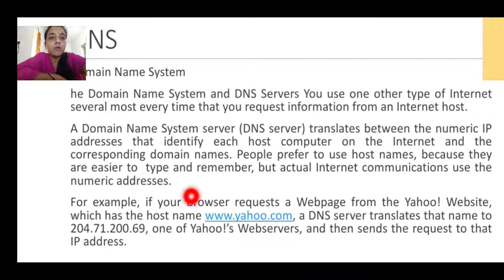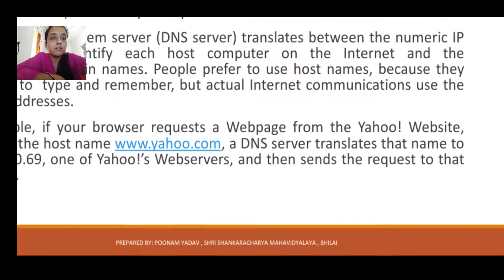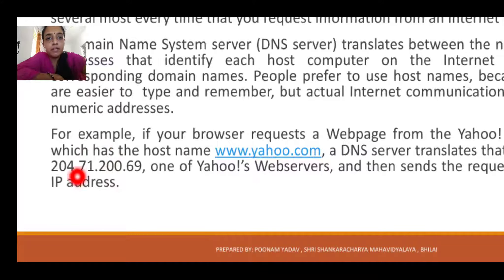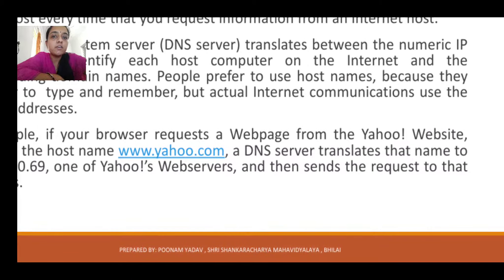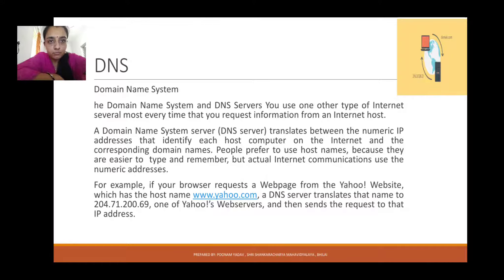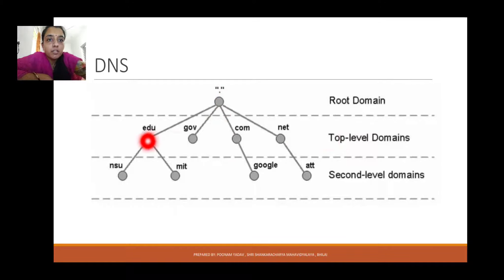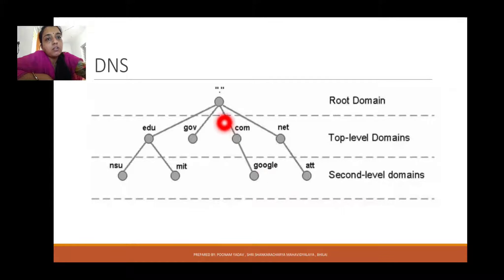For example, the host name for Yahoo is www.yahoo.com. The DNS server translates the name to its IP number, and one of Yahoo's web servers then sends a response to that IP address. There is a root domain, a top-level domain such as .edu, .gov, .com, .net, and a second-level domain such as Google. So you can access a website as google.com or mit.edu. This is how the DNS system works.